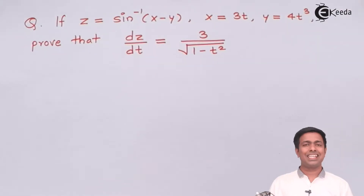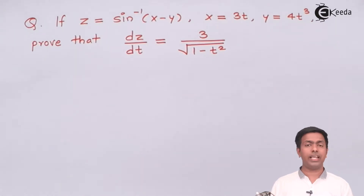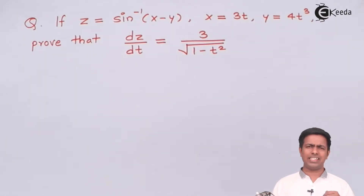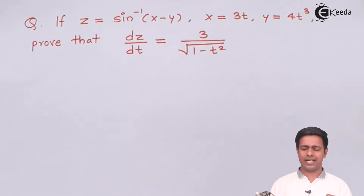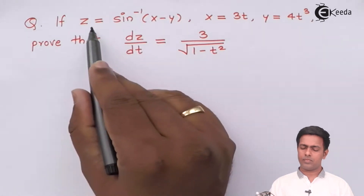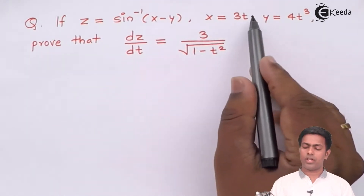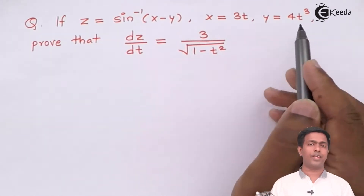Here, z is sin inverse of (x minus y), the value of x is 3t, and the value of y is 4t cubed. We can easily see that z is a function of x and y, and both x and y are functions of t.